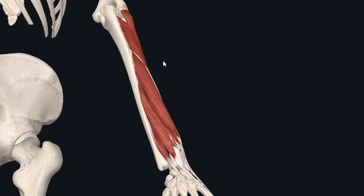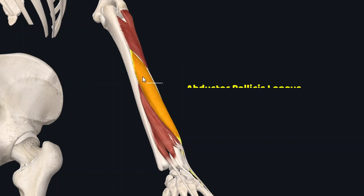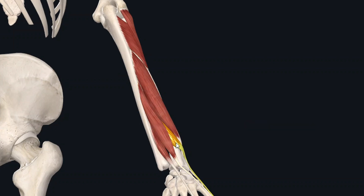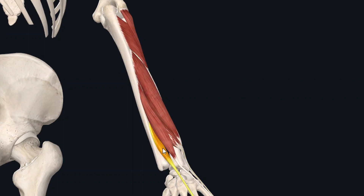Just like the superficial muscles, the deep muscles are also 5 in number. These are the supinator muscle, the abductor pollicis longus muscle, the extensor pollicis longus muscle, the extensor pollicis brevis, and the extensor indicis muscle.